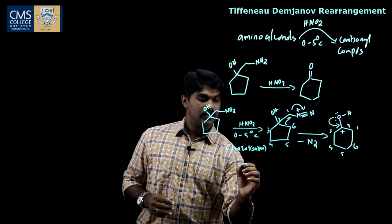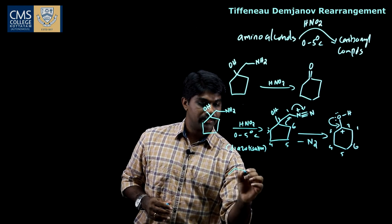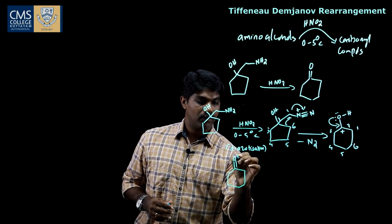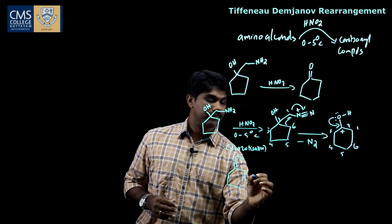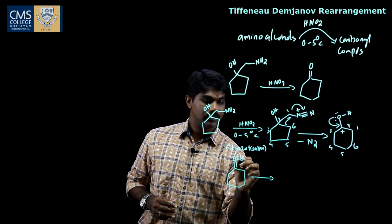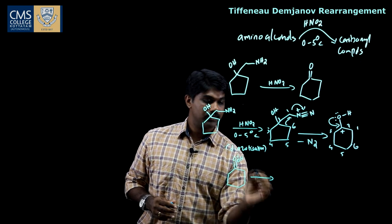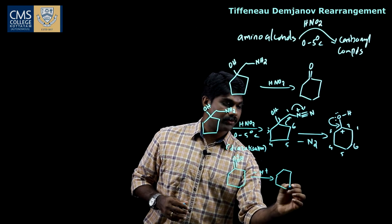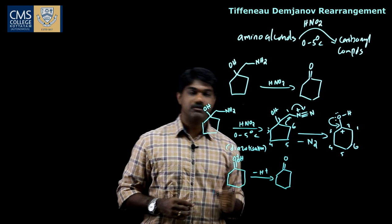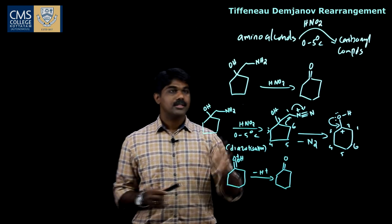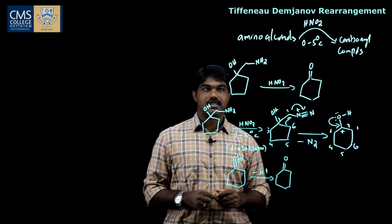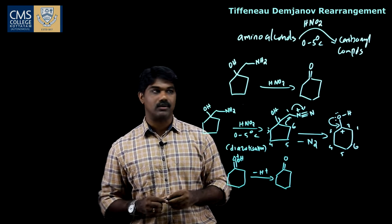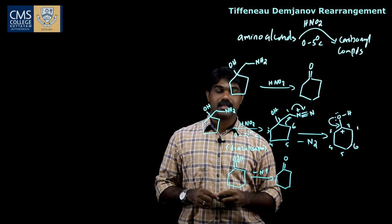Then the electrons shift to this position and we get a C=O double bond. This proton then donates its electron to the oxygen atom and gets deprotonated to form the final product.